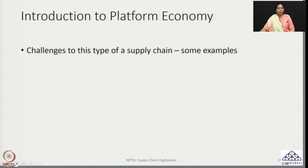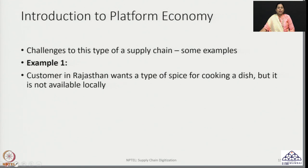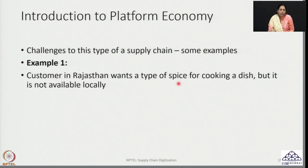Let us pick up an example to understand the kind of complexity we could see in practice. In this simple example, we have a customer who is interested in cooking. This customer wants to make a specific kind of dish and needs a particular type of spice to create it. The customer is located in Rajasthan and has observed that the spice required for cooking this dish is not available locally.